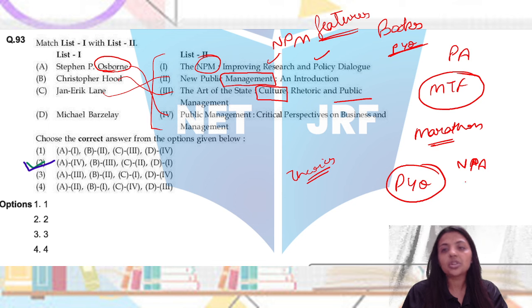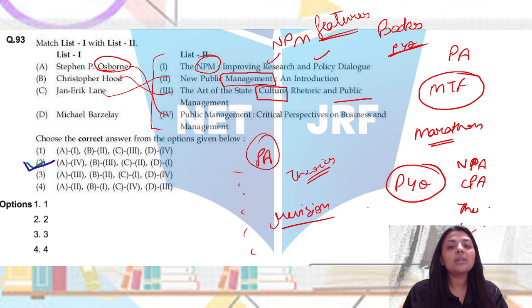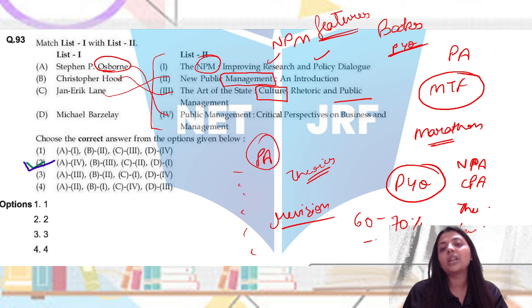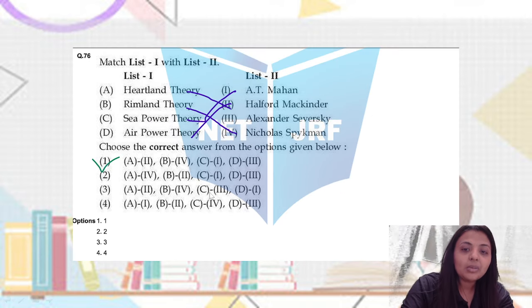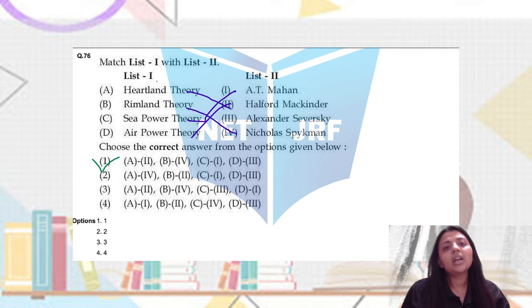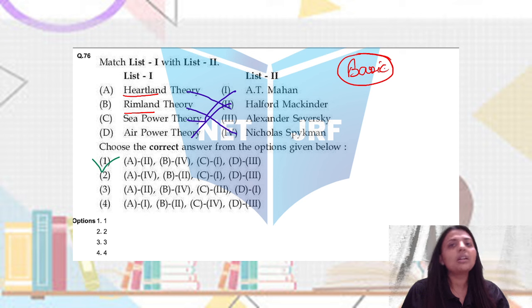So obviously Osborne has written a critical perspective in business and management. Christopher Hood talked about the art of the state, culture and public management and how cultural factors impact public management and administration. Jan Eric Lane wrote about new public management in general. Michael Barzelay wrote NPM Improving Research and Policy Dialogue. So we have asked about NPA New Public Administration, Comparative Public Administration, Theories, Classical Approach, they have a long list of public administration related short notes and put them in revision. So if you think 60-70% books and thinkers are covered, then you can easily solve.